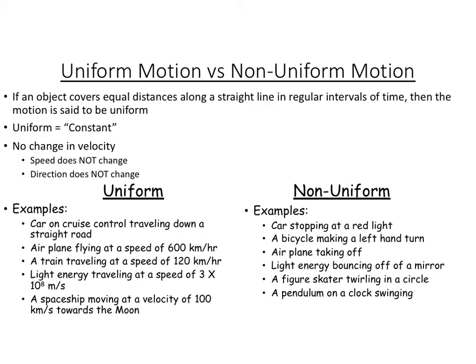Non-uniform motion is when we're having a change in velocity. So we're speeding up, slowing down, or we may even be just changing direction. Examples could be a car stopping at a red light, so it's changing its speed. A bicycle making a left-hand turn, so remember just changing direction can do this. Airplanes taking off, so they're speeding up, and so on.